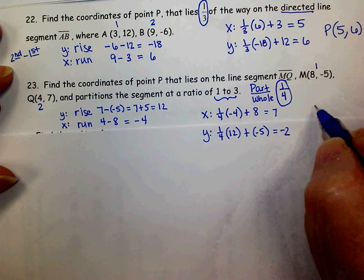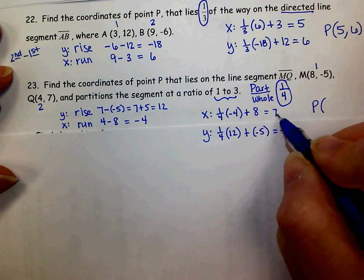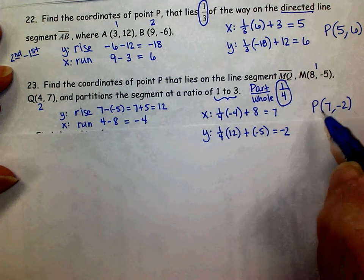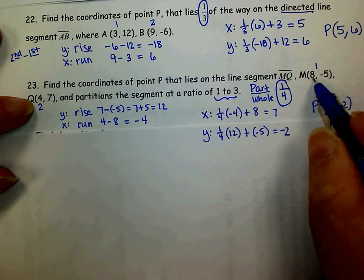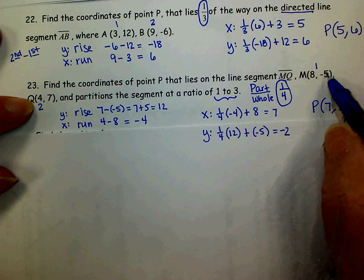So point P is the point 7, negative 2. 7 is between 8 and 4. Negative 2 is between negative 5 and 7.